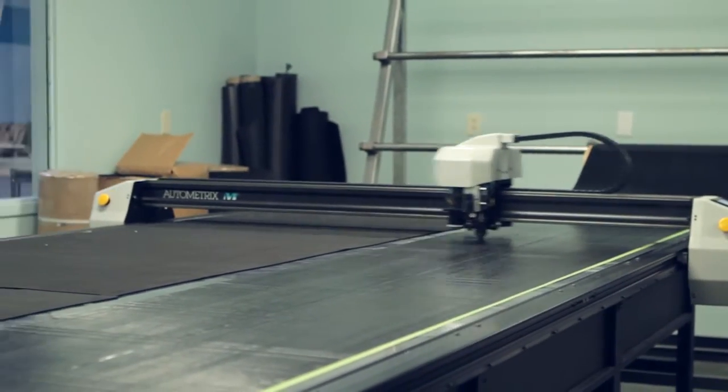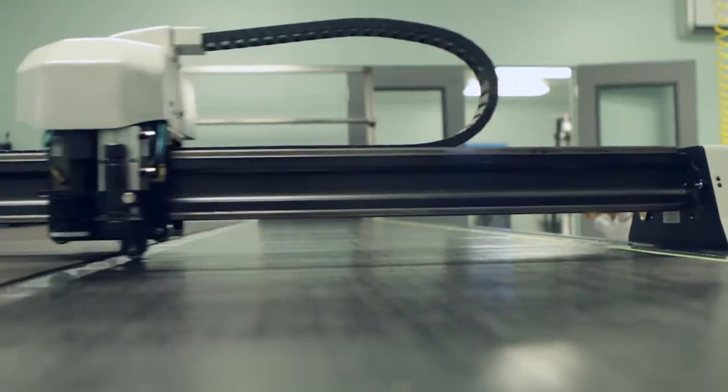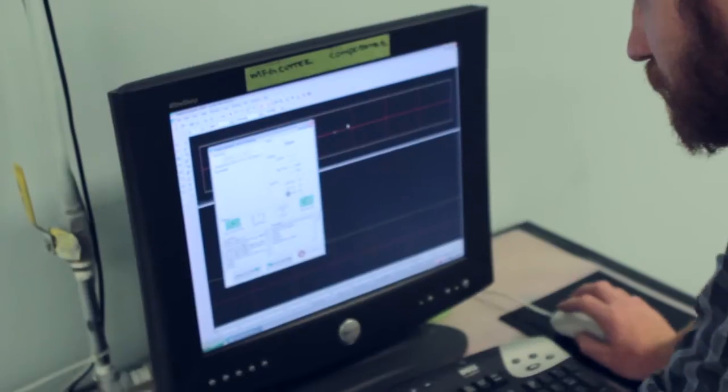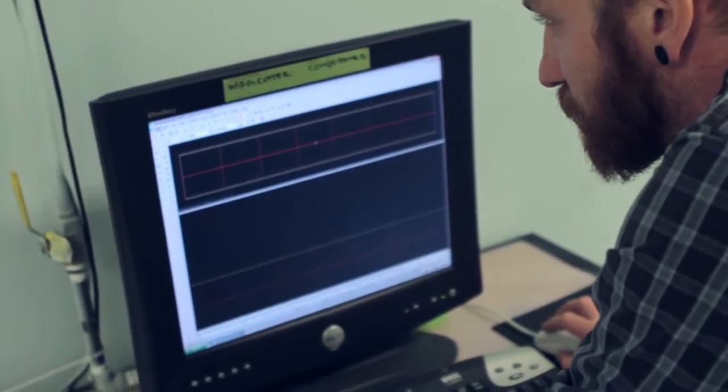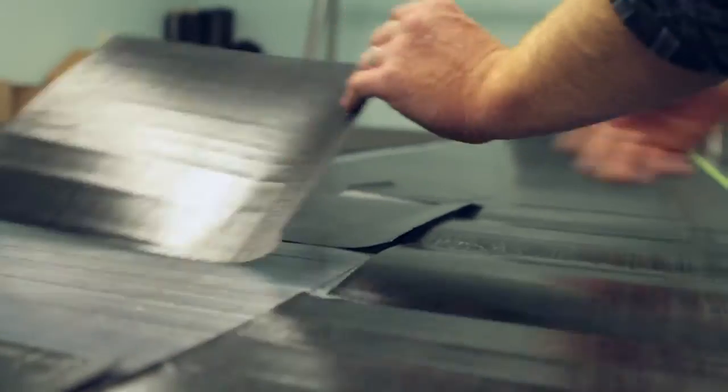The composite materials are very expensive, especially in the prepreg form, and so any loss can be very costly. With the autometrics we can program and optimize each table so we get full utilization, so the amount of scrap we have is very little. It's one of the biggest benefits that we save a tremendous amount versus the hand layup.